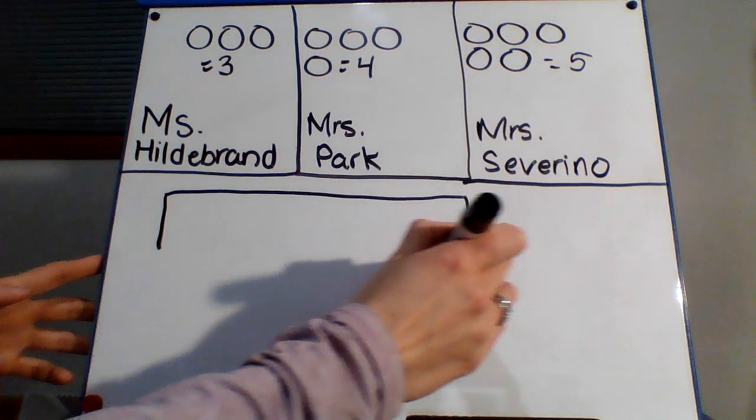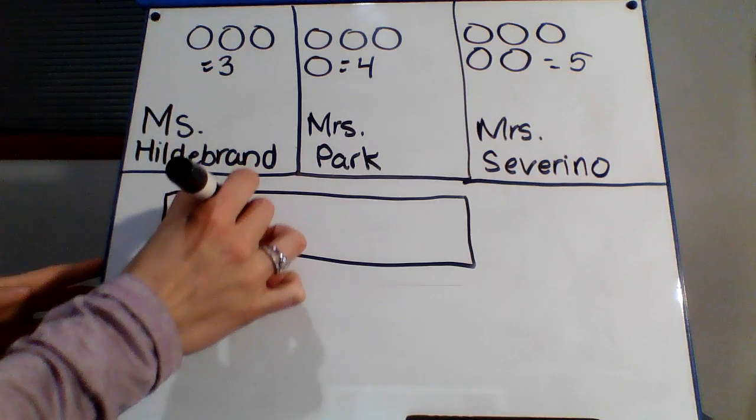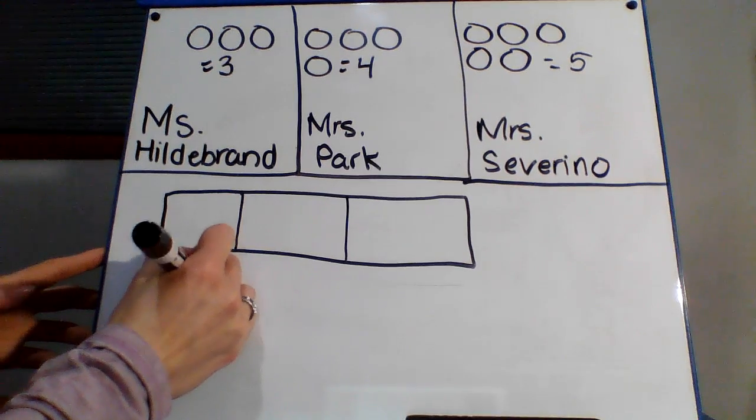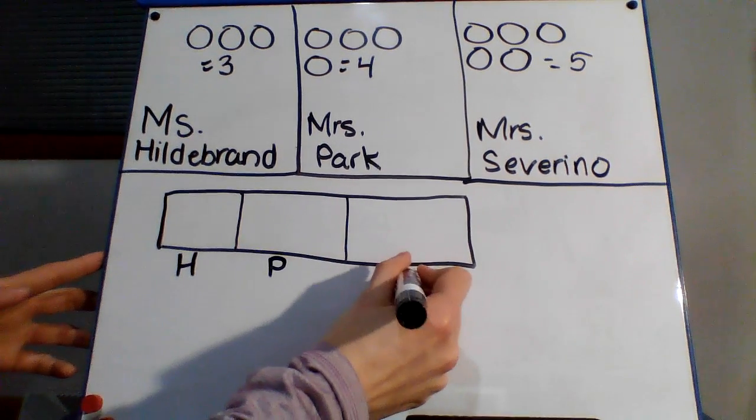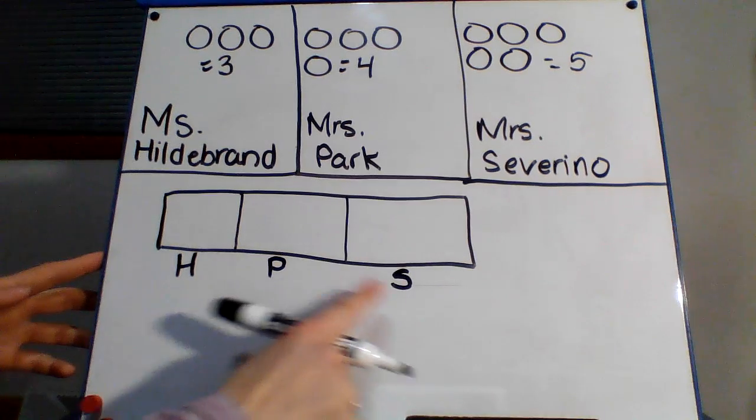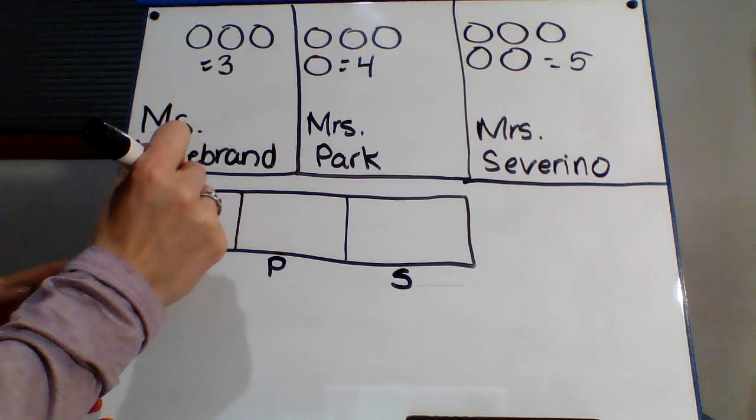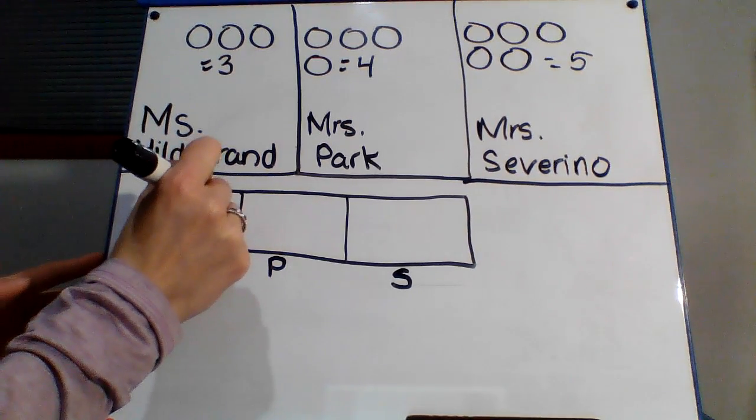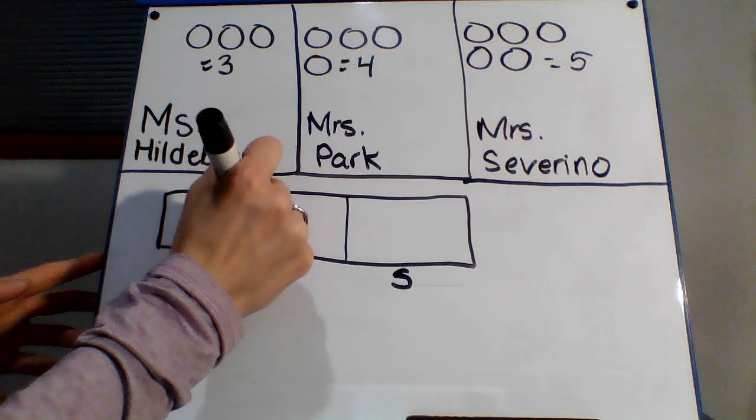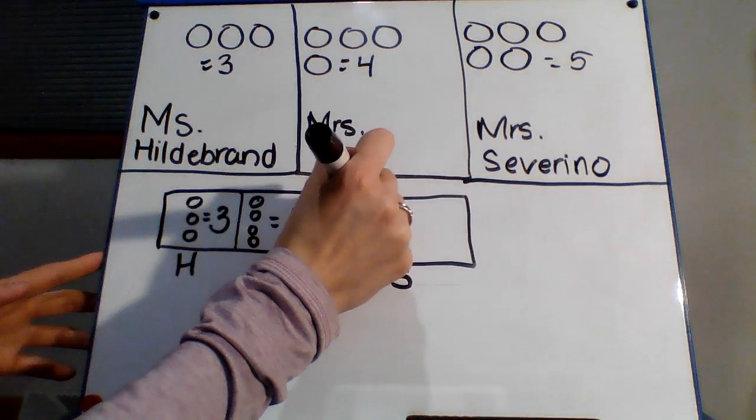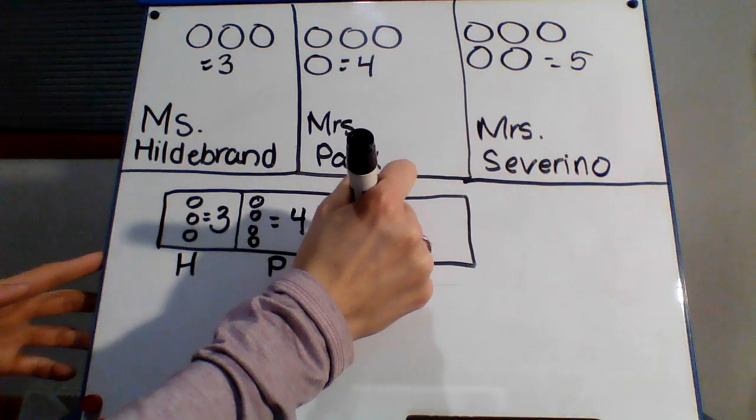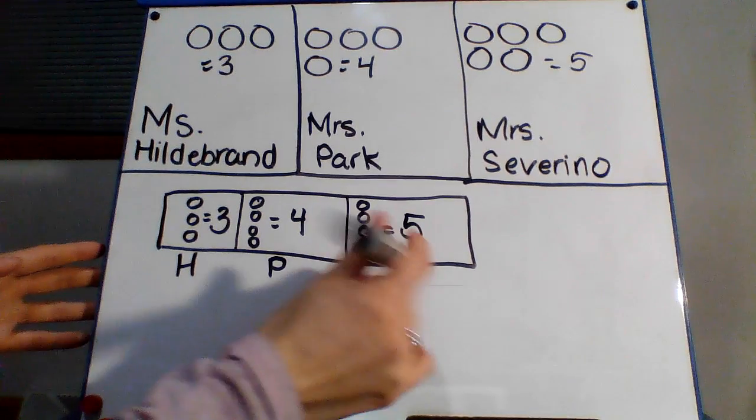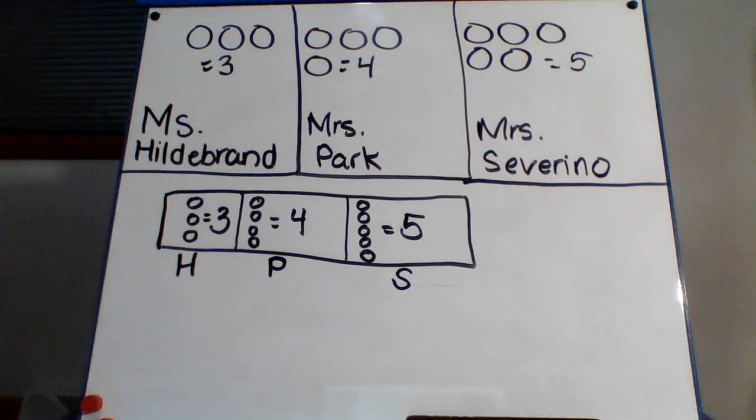So remember, you draw out your tape diagram to represent Miss Hildebrand has three, Miss Park has four, and Miss Severino has five. So I'm just going to write our letters of our first names just to make it easier. Hildebrand, Park, Severino. Okay, so I'm going to draw my three. If you want, you can also write it. Miss Park has four, and Miss Severino has five. That looks like a five.